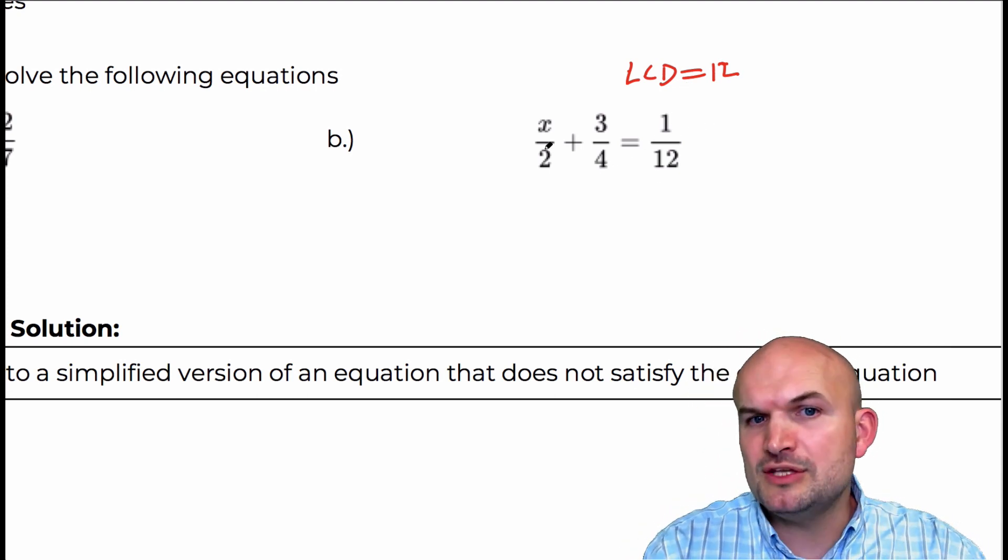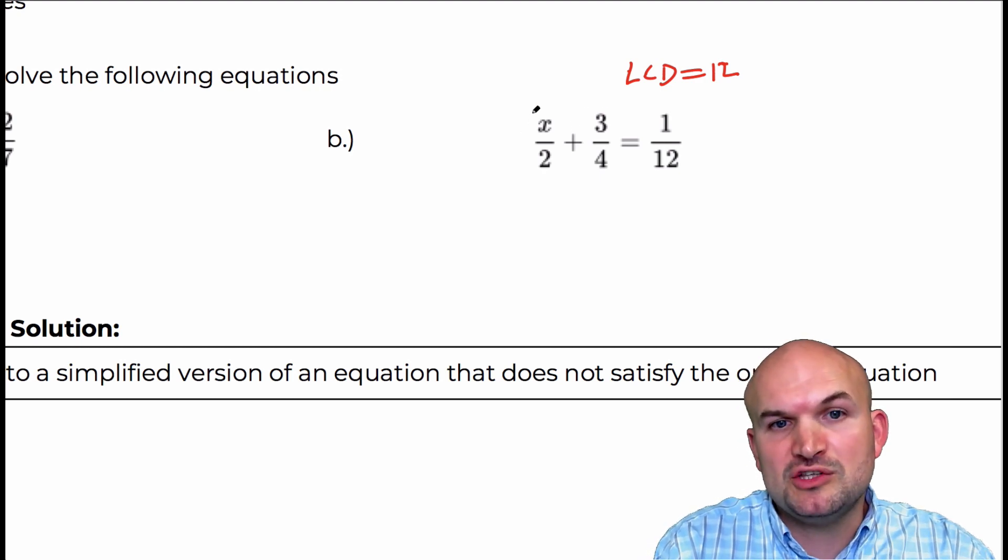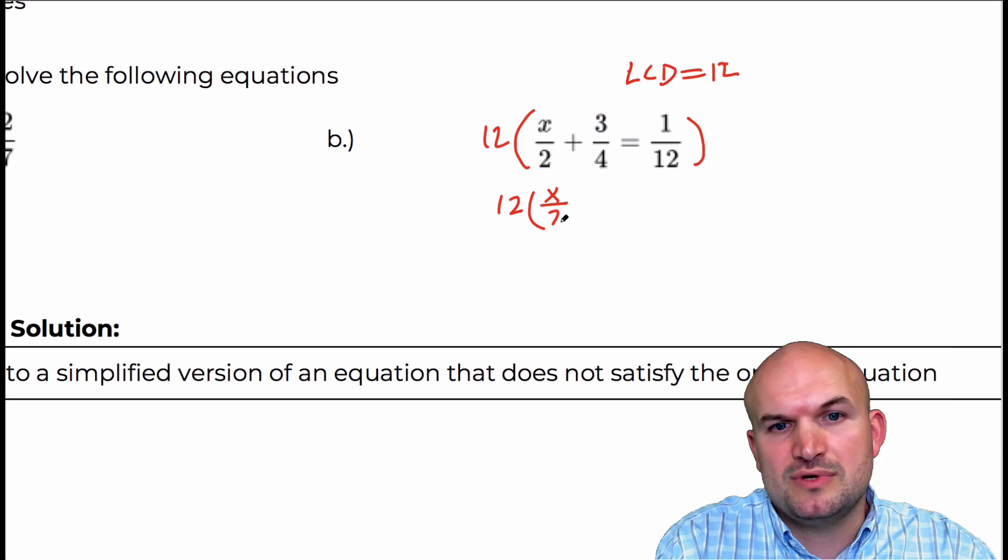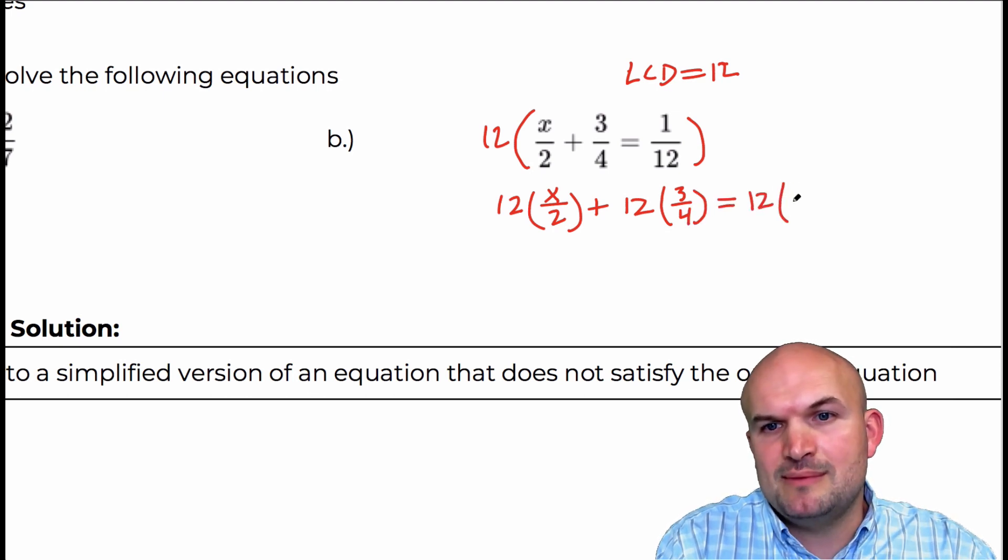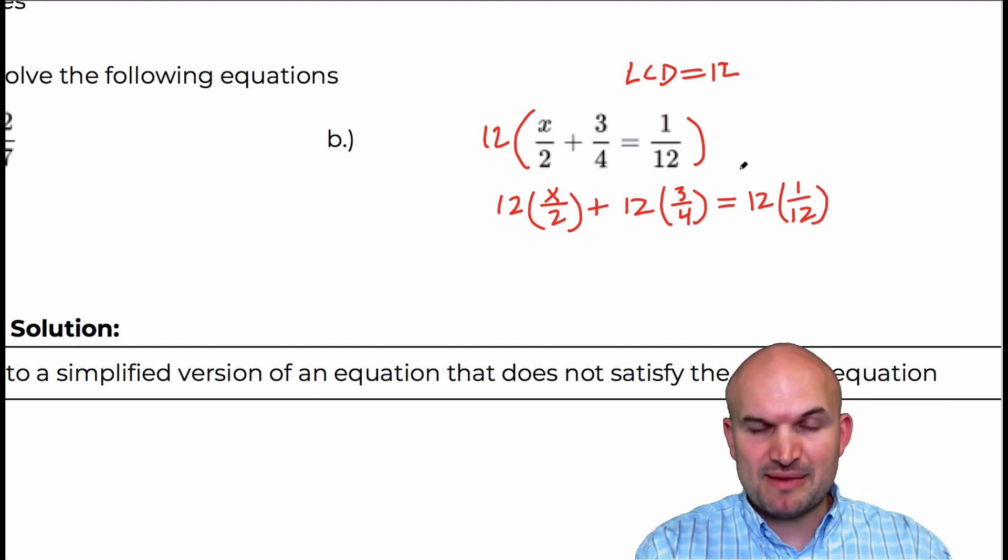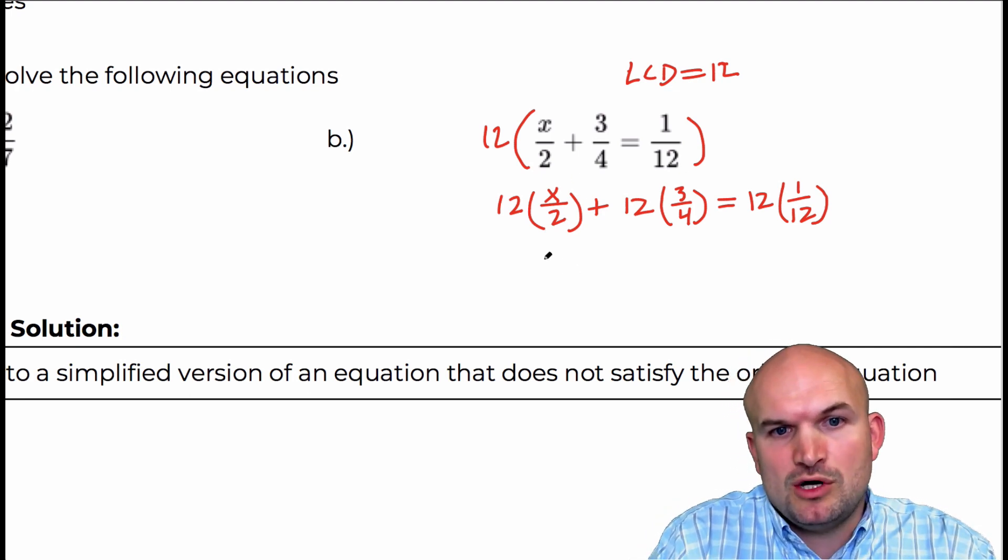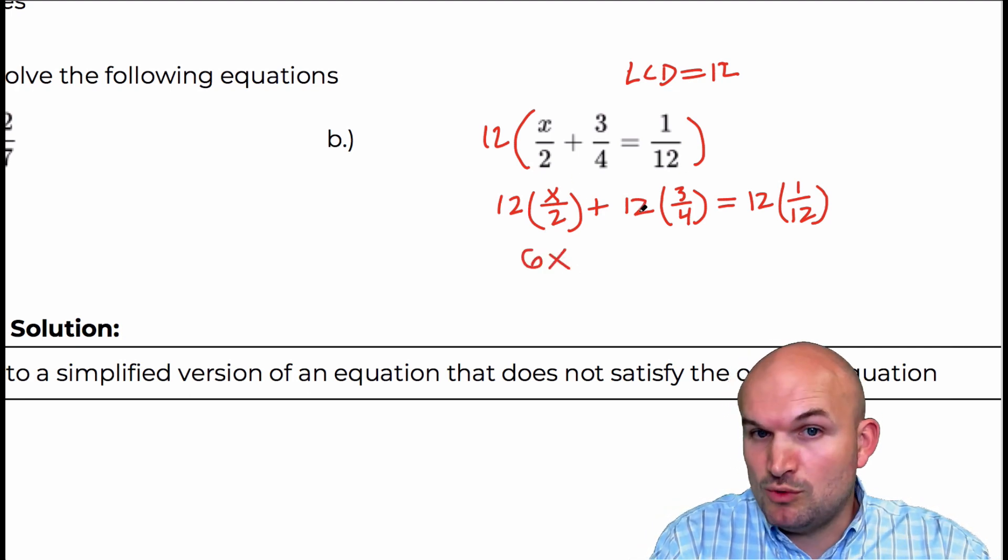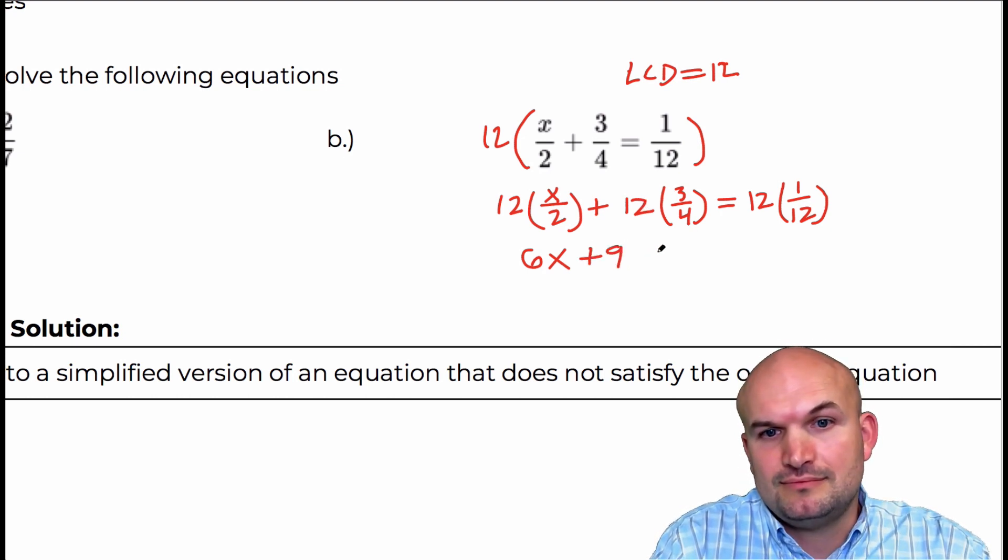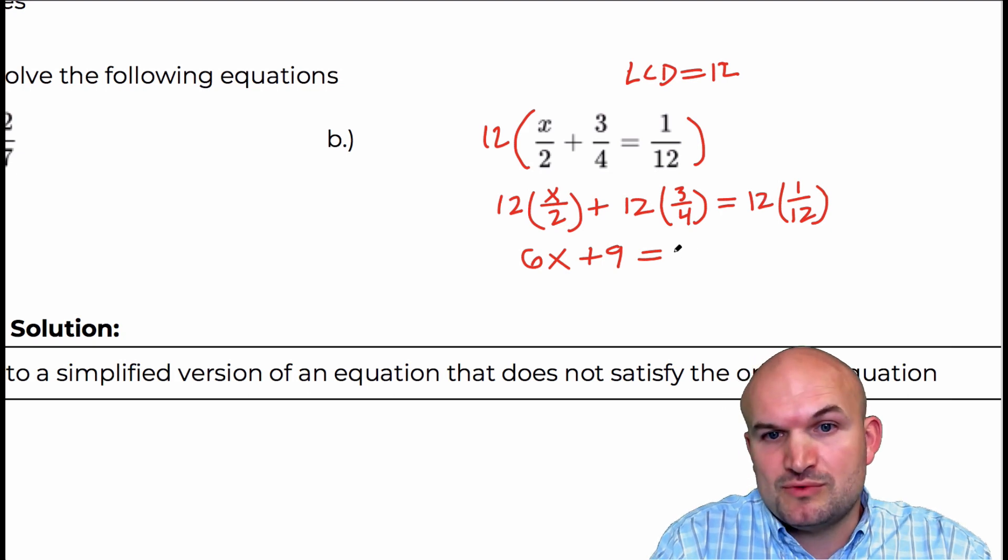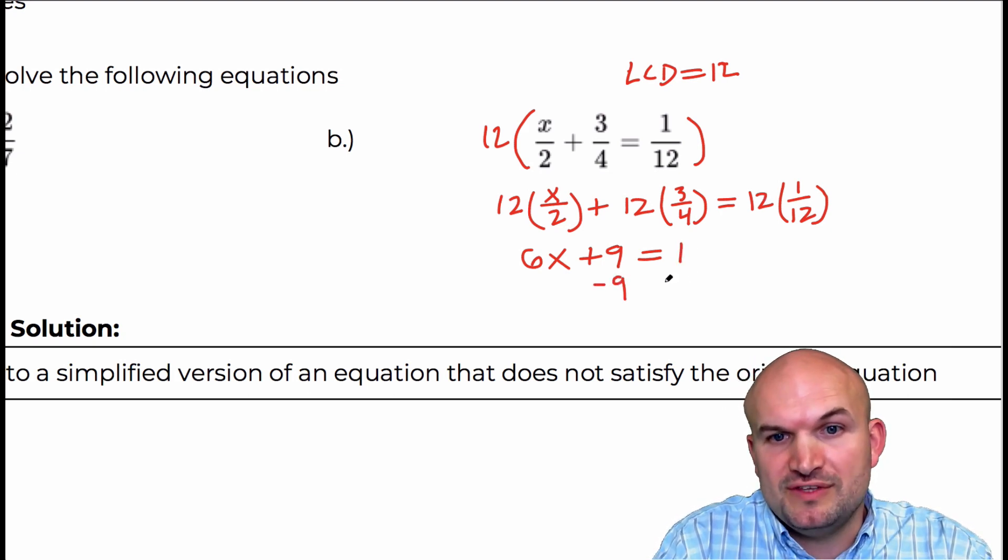So rather than using fraction operations, what we can do is if we multiply everything by 12, then we're going to have 12 times x over 2, plus 12 times 3 over 4 is equal to 12 times 1 twelfth. Now what that does is by multiplying everything by the LCD, you now eliminate your denominators. Because 2 divides into 12, 6 times, 4 divides into 12, 3 times, and 3 times 3 is 9. And 12 divides into 12, 1 times 1 times 1 is 1.